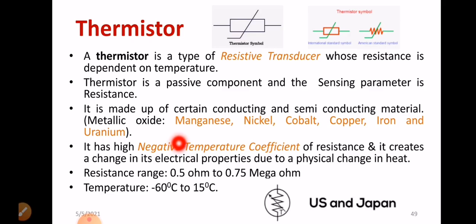There are two varieties of thermistor: thermistor having positive temperature coefficient of resistance and negative temperature coefficient of resistance. However, negative temperature coefficient materials are most commonly used. That means temperature and resistance are inversely proportional. The resistance range varies from 0.5 ohm to 0.75 mega ohm. The temperature you can measure in the range of minus 60 degree Celsius to 15 degree Celsius.